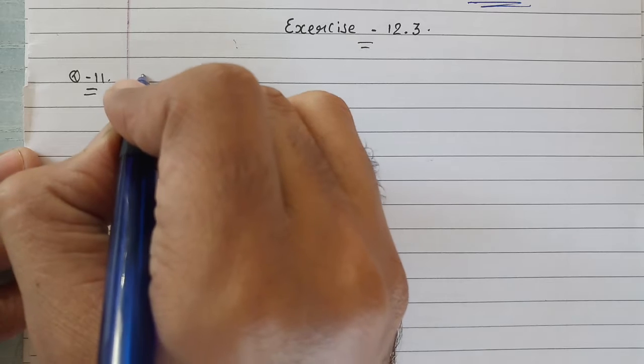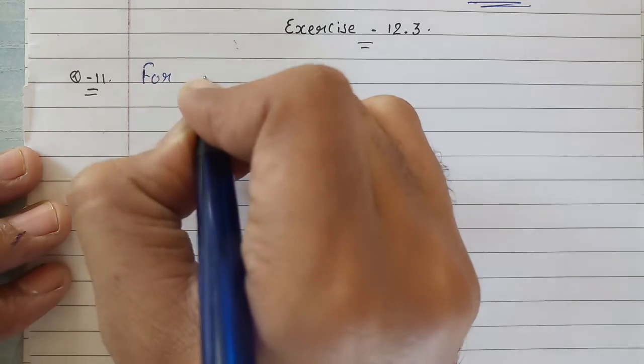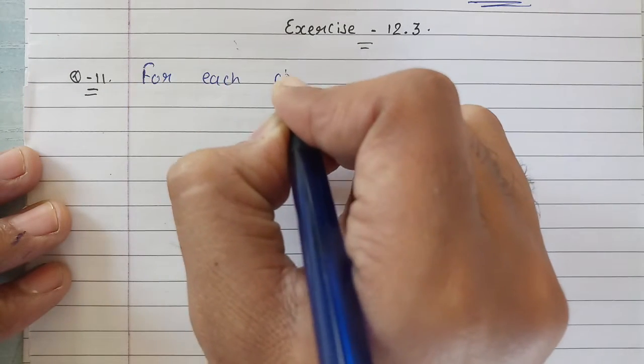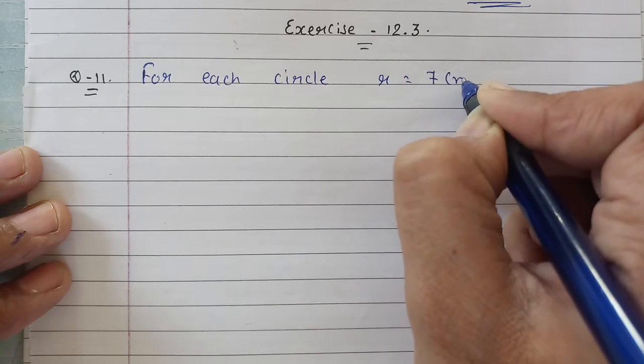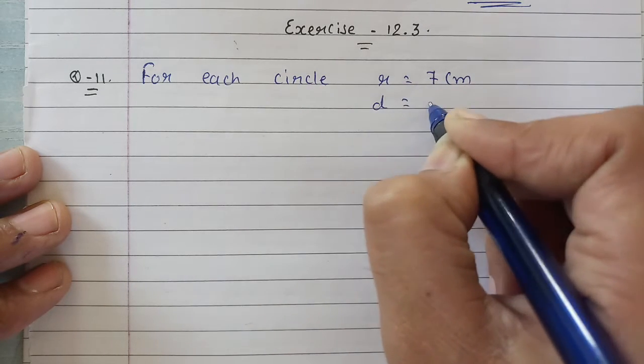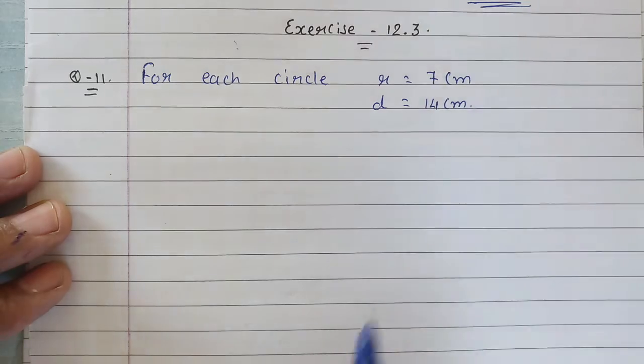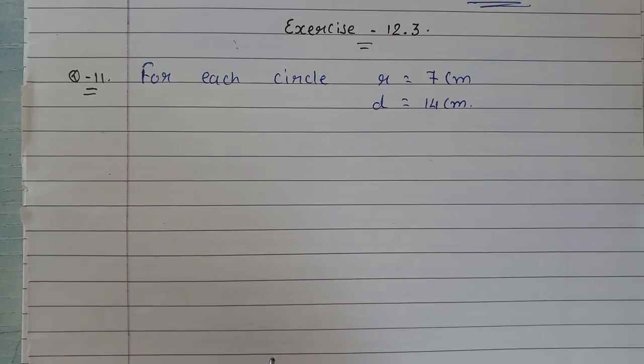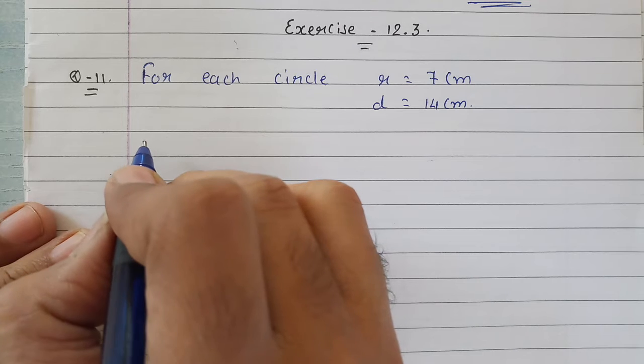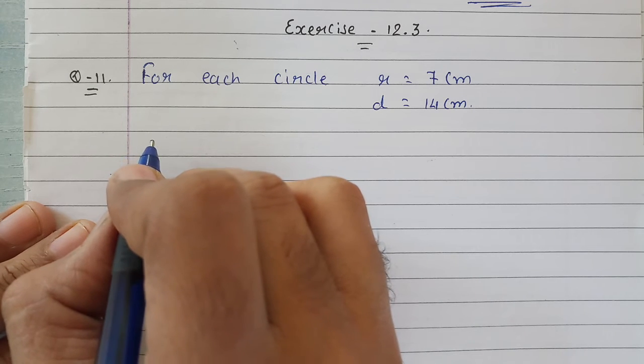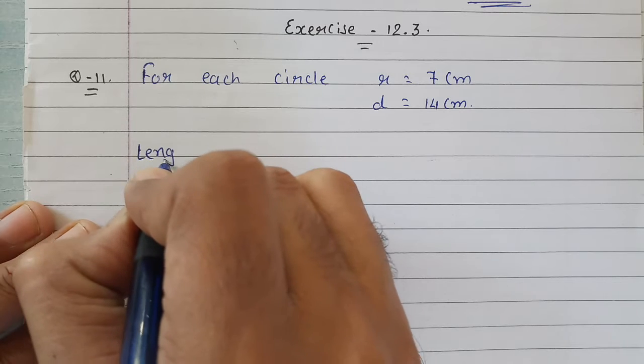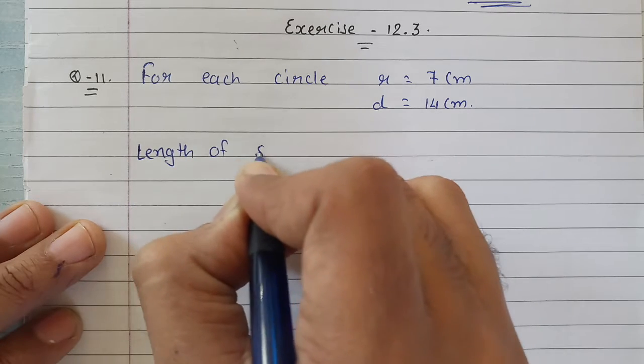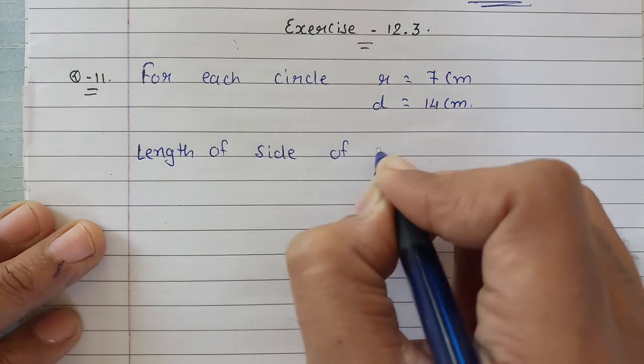As I said in the figure, for each circle radius is 7 centimeter, which means diameter is 14 centimeter. Now what we need is the length of side of square.